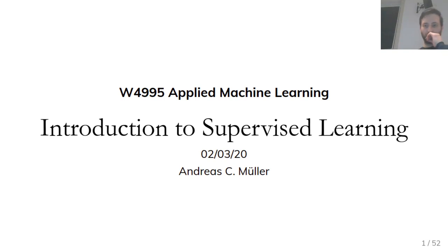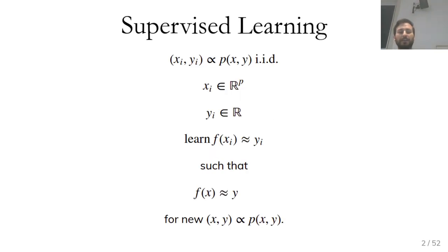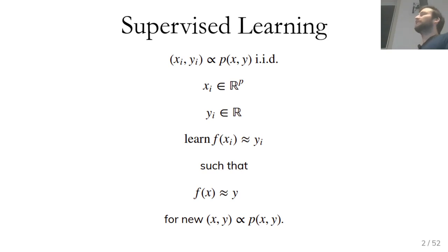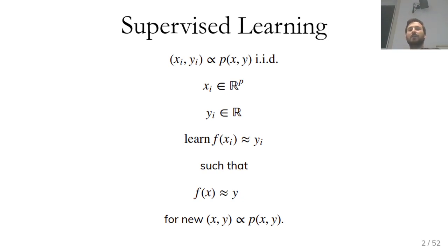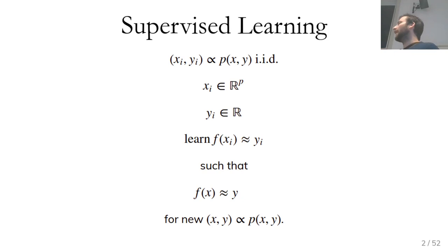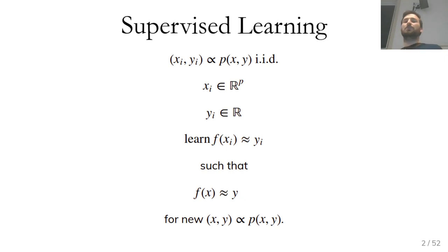A brief recap on supervised learning: we assume we have two variables X and Y sampled iid from some underlying distribution. X is the description of our data — the features — and Y is the target. We have N sample points drawn iid from this distribution and we want to learn a function f such that f(X_i) is approximately Y_i on the training set, and also generalizes to new samples drawn from the same distribution.